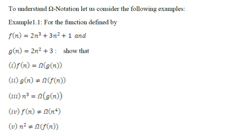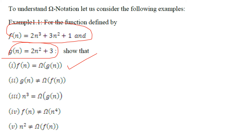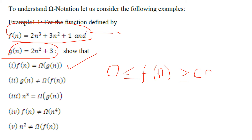Now let's look at another notation — the big Omega notation. The question here is: given f(n) = 2n³ + 3n² + 1 and g(n) = 2n² + 3, show that f(n) = Ω(g(n)). The condition to prove is that f(n) ≥ c·g(n) for all n ≥ n₀ and c > 0.